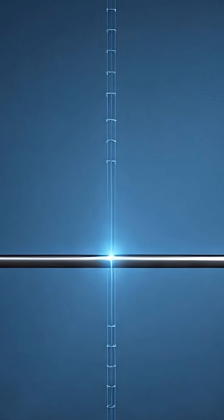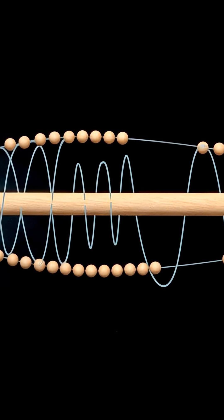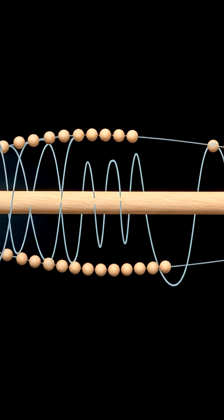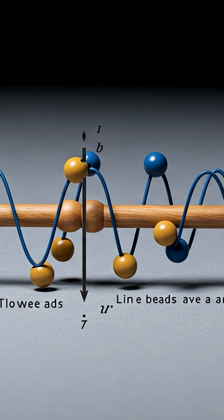3. The beads move. The gravitational wave causes the proper distance between the beads to oscillate. However, because the rod's length is fixed, the beads are forced to slide back and forth along the rod in response to the wave's oscillations.